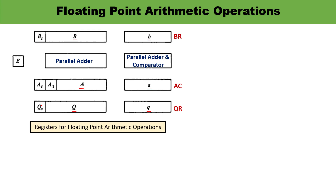BS, AS, and QS represent the sign of the numbers — if the number is positive it is 0, if negative this bit is 1. When addition or subtraction is performed, one number is in BR and the other is in AC; the result is stored in AC. If any carry is generated during addition, it is stored in the E flip-flop. A parallel adder performs the addition, and a comparator handles the exponent parts.